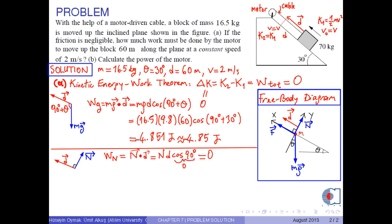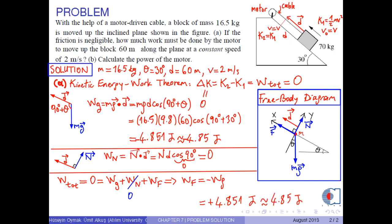We know that the total work is the sum of the work done by each force. Therefore, we get an expression for Wf as negative Wg. Thus, the work done by the motor equals 4.851 joules, or approximately 4.85 joules.